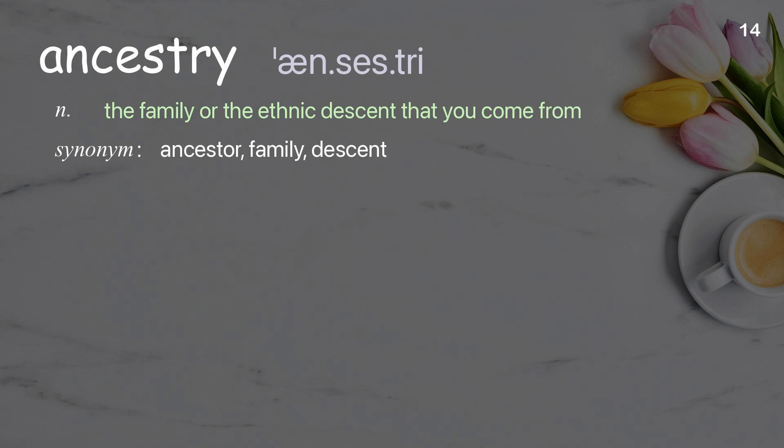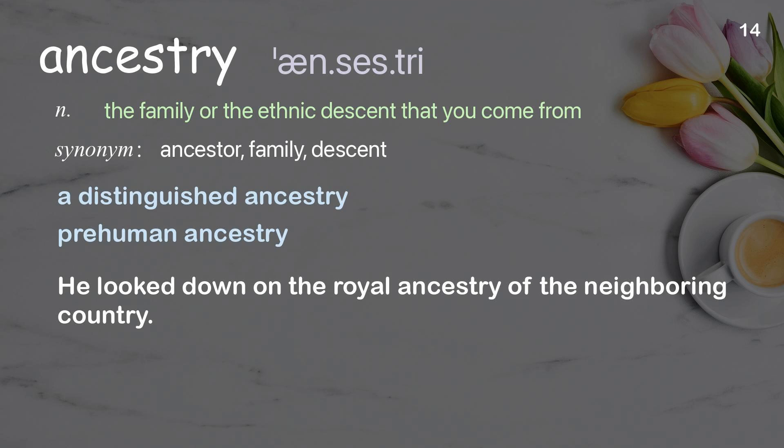Ancestry. The family or ethnic descent that you come from. Examples: a distinguished ancestry; pre-human ancestry. He looked down on the royal ancestry of the neighboring country.